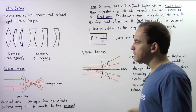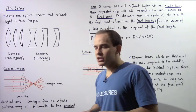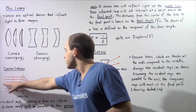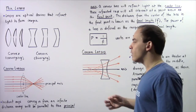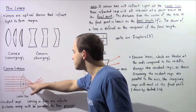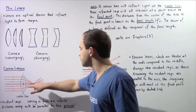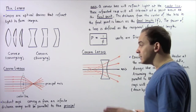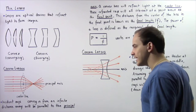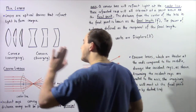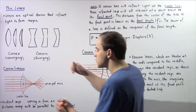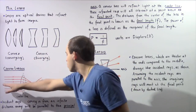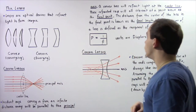Let's begin by describing what convex lenses do. Suppose we take a double convex lens and draw our principal axis, which is simply a straight line that passes through the center of our convex lens and is perpendicular to the surface of the lens. If our incident rays are coming from an infinitely far distance away, they will all be parallel with respect to the principal axis.